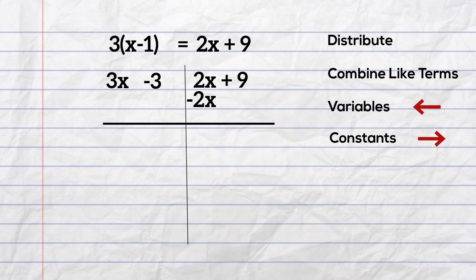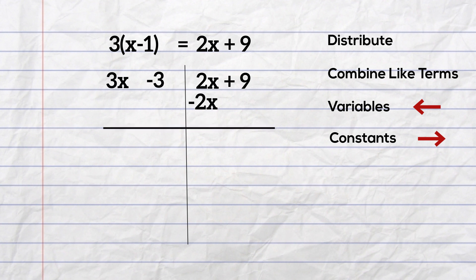But remember the rules of equations means if you do something to one side of the equation, you must do the same to the other side. So I will subtract 2x from the left side.